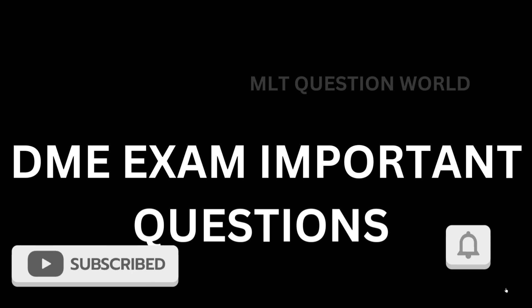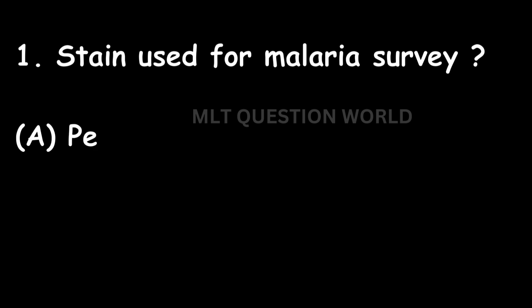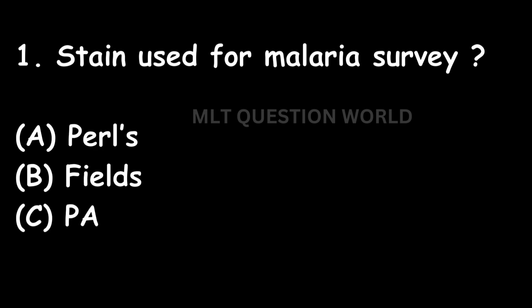Let us start. Question number one: which stain is used for malaria survey? Option A: Pulse. Option B: Field stain. Option C: PAS. Option D: Giemsa.